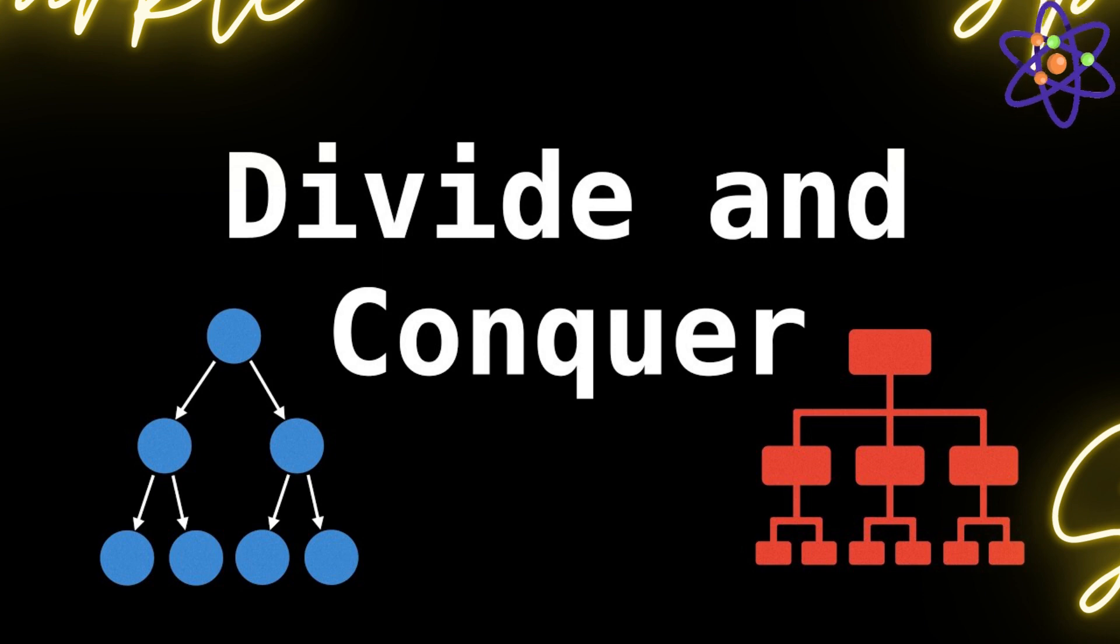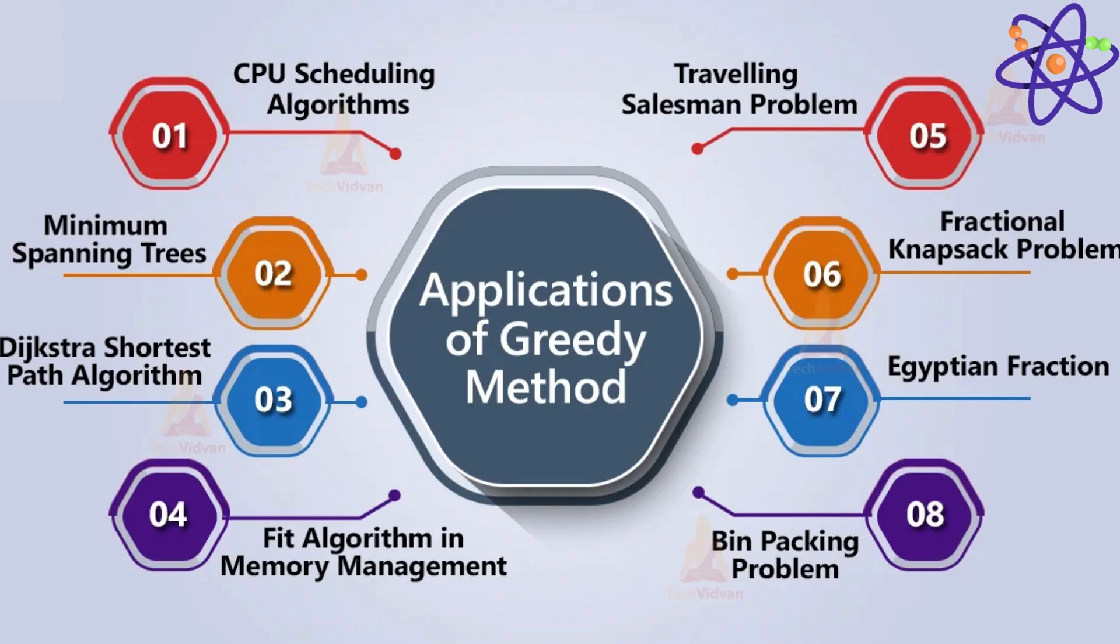Key algorithms covered include merge sort, quick sort, the master theorem for analyzing their time complexity, and many methods like recursive tree method or substitution method. The next chapter is about greedy algorithms.